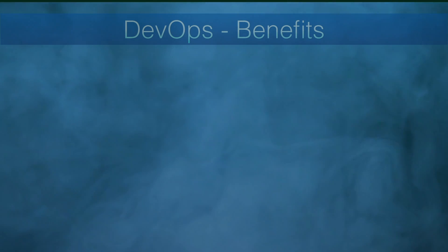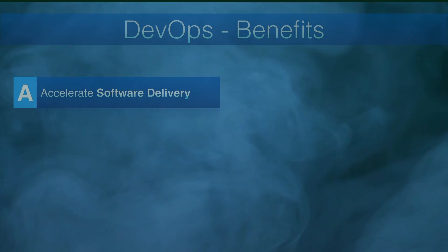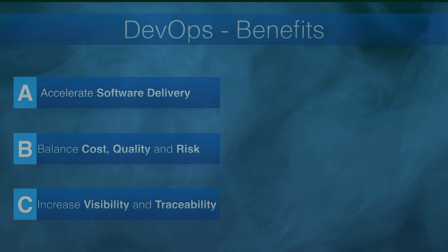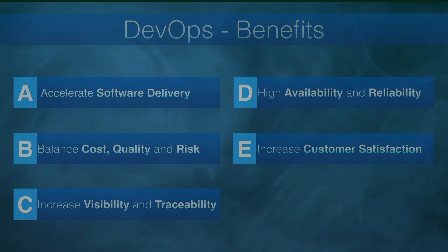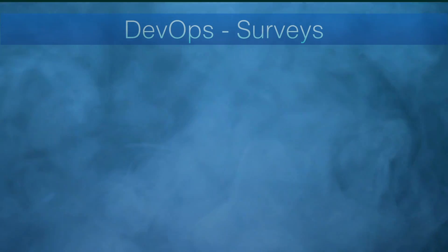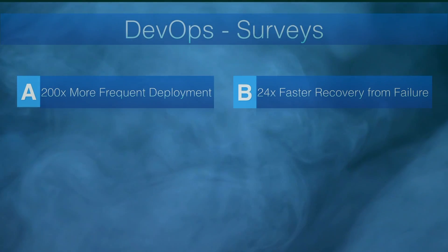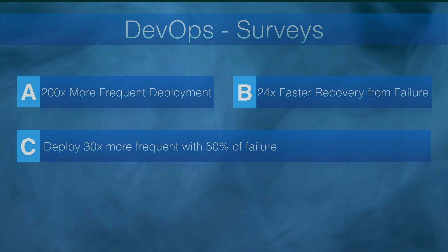Let's conclude with DevOps benefits. DevOps accelerates software delivery through a continuous delivery model. It balances cost, quality, and risk by enabling continuous process checklists. It increases visibility and traceability by automating the continuous delivery process. It provides high availability and reliability through continuous monitoring. A fast customer feedback loop helps with continuous improvement. And it improves team communication and collaboration. Some key DevOps findings: DevOps can enable 200 times more frequent deployments, 24 times faster recovery from failure, 30 times more frequent deployments with 50% fewer failures, and 50% less time spent remediating security issues.